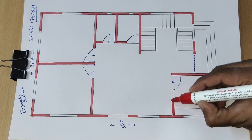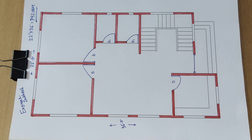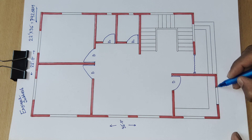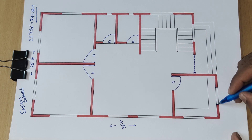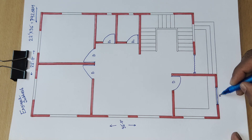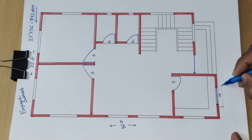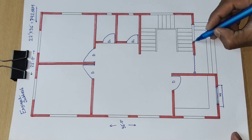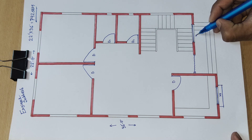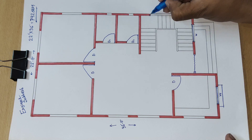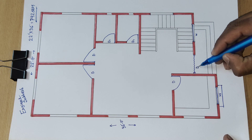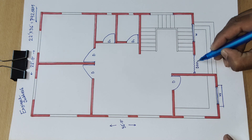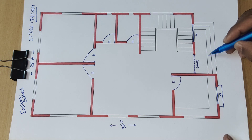If we keep the wall at 10 inch or 9 inch, we will get less space inside the room. Here W stands for window, and this is the door — this is the entry.